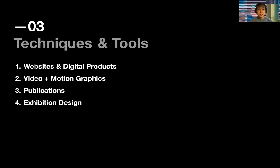Next, we're going to go into techniques and tools. This chapter is roughly split into four categories: websites and digital products, video and motion graphics projects, publications, and exhibition design. That said, many projects are actually cross-platform, so this is broken down by case studies. While you might see mockups for websites and digital products, you'll see how various design studios told a 360-degree story about their work across platforms.